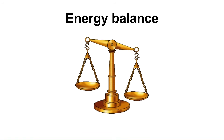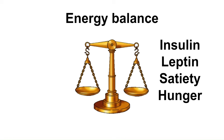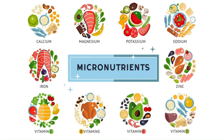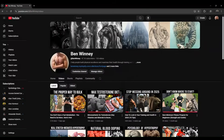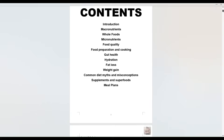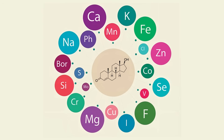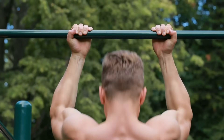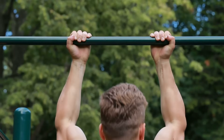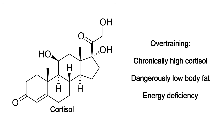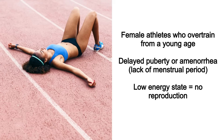Energy balance — insulin, leptin, satiety, and hunger — is all relevant to GnRH production. You need all of your micronutrients as well. Exercise is always good as it improves energy balance, which benefits the whole HPG axis. Don't overdo it though, as chronic overtraining can lead to elevated cortisol, dangerously low body fat, and energy deficiency. Female athletes who overtrain from a young age often have delayed puberty or amenorrhea because their brain perceives them as being in too low an energy state to reproduce.